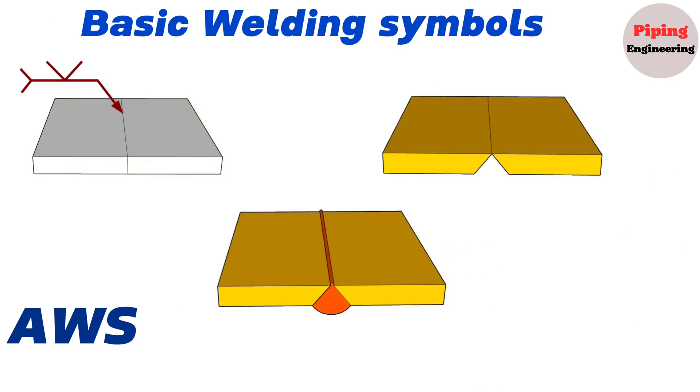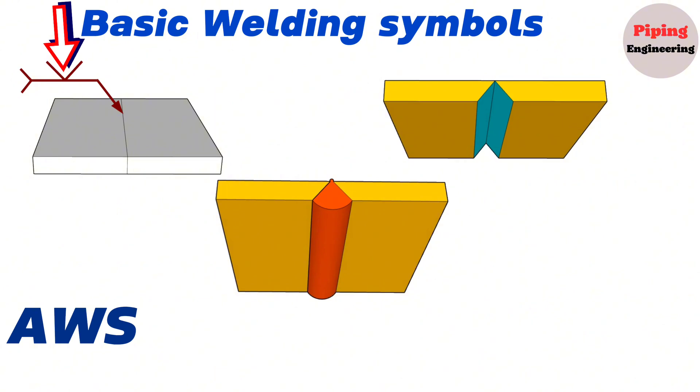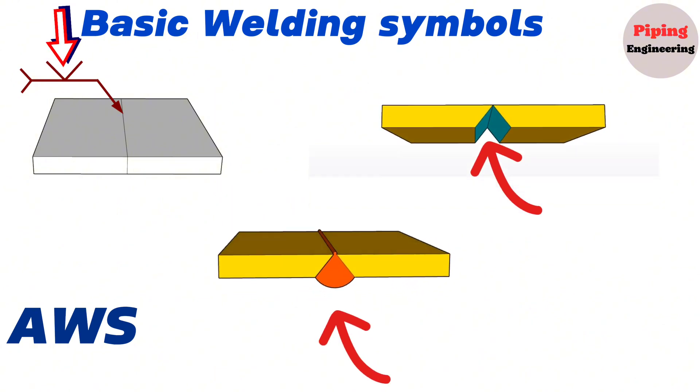If the welding symbol is showing above side of the reference line, the weld is carried out on the opposite side, bottom side of the joint.